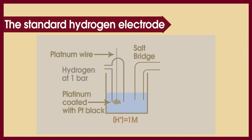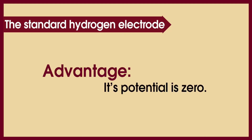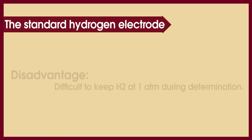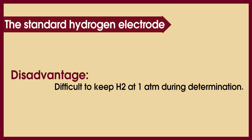Everything in our life has advantages and disadvantages. The advantage is that the potential is zero, which allows measurement of the electrode potential of another half cell. The disadvantages are: first, difficulty in keeping hydrogen at one atmosphere during determination; second, the need to continuously re-plate the platinum; and third, it is not portable.